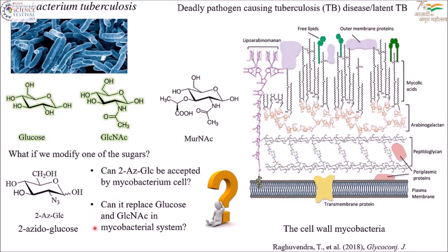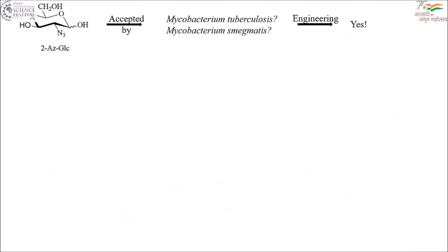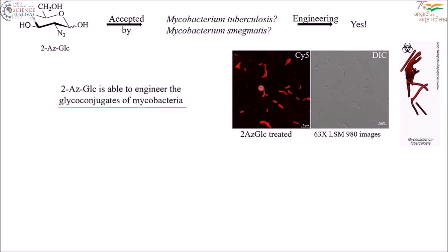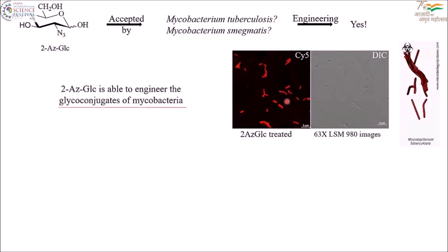If accepted, can this modified sugar replace glucose or GlcNAc in a mycobacterial system? To the question of whether 2-azidoglucose is accepted by mycobacteria — the answer is yes. We can see beautifully red-labeled bacteria. This we now call an engineered mycobacteria.